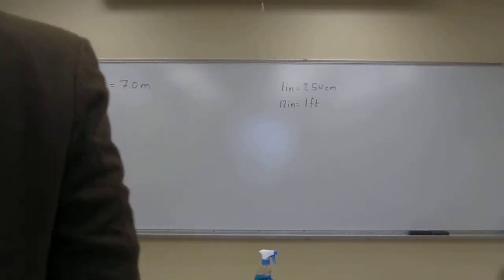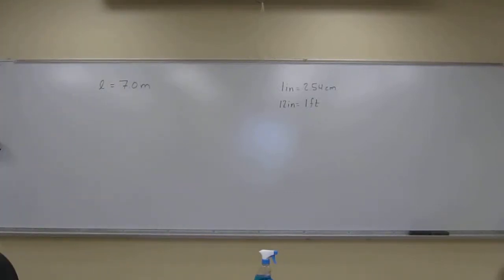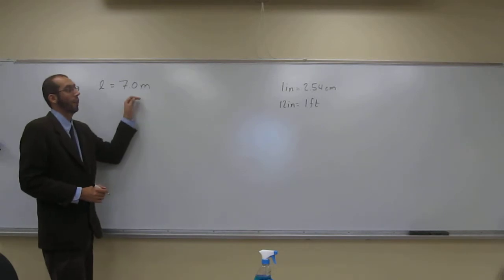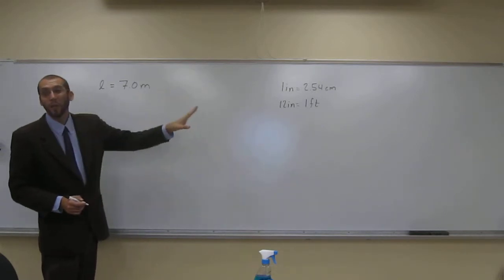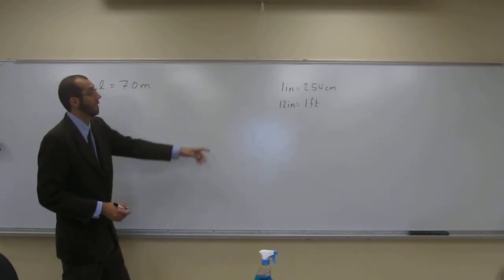So this one, this question asks us, convert the length 7.0 meters to feet, and it gives us these two conversion factors. One inch equals 2.54 centimeters, and 12 inches equals one foot. But it doesn't give us a conversion factor from something to meters. But it gives us the centimeters.